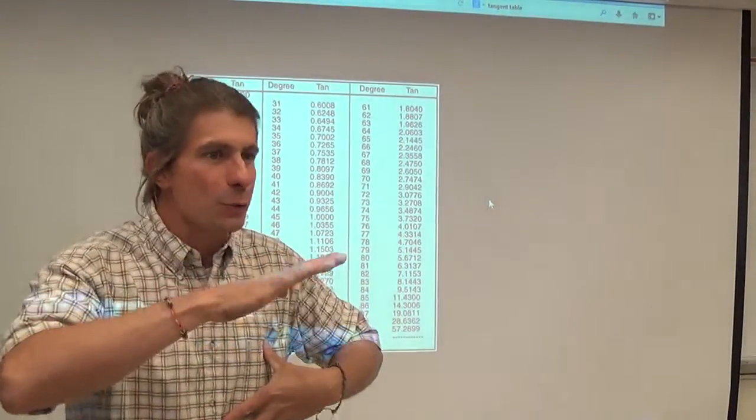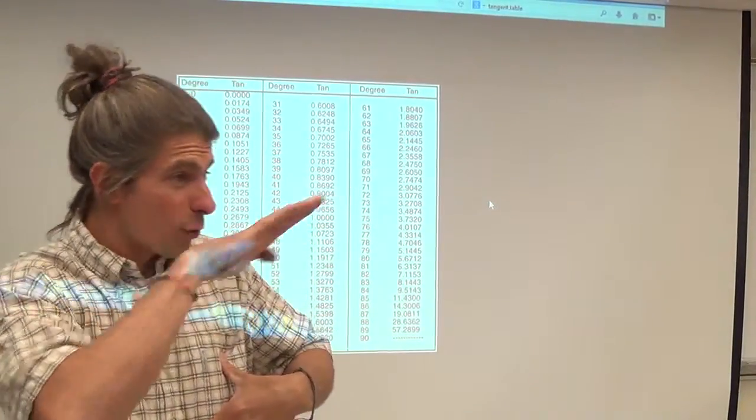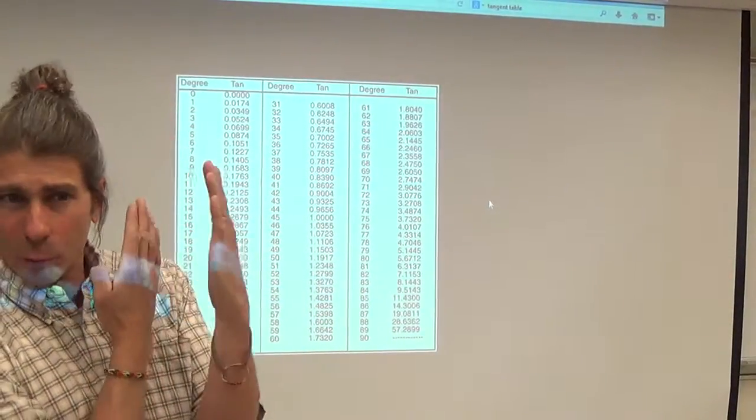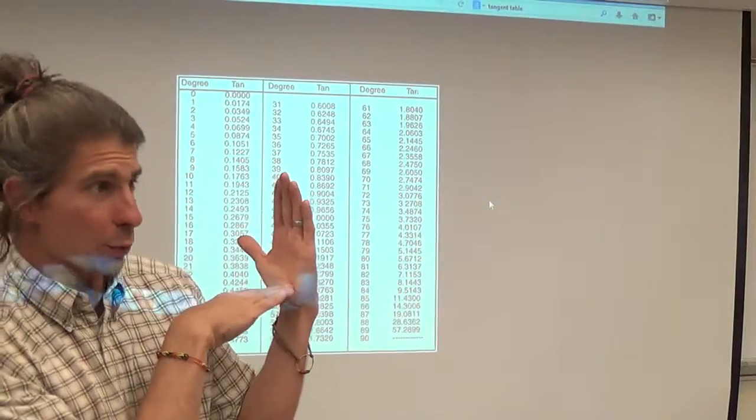You're driving on the hypotenuse of the triangle, right? And the triangle is your form. You're driving on the hypotenuse, which means the rise and the run are hidden from you. You can't see them at all.